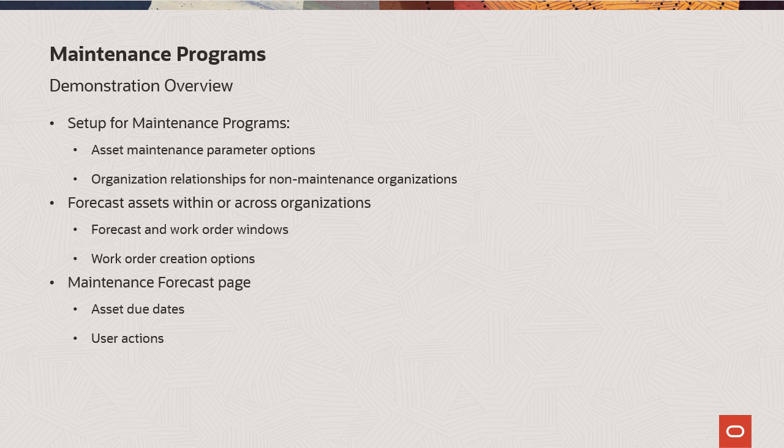Optionally, you can set up organization relationships if you wish to forecast and create work orders for assets that operate in non-maintenance organizations. Then we're going to review the forecast of assets both within the contextual organization, as well as those assets that are across organizations.